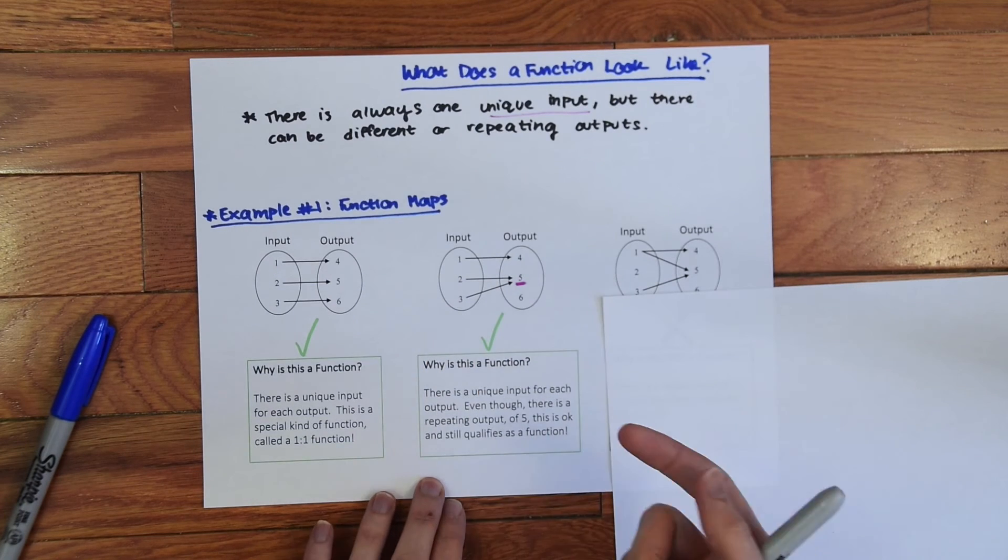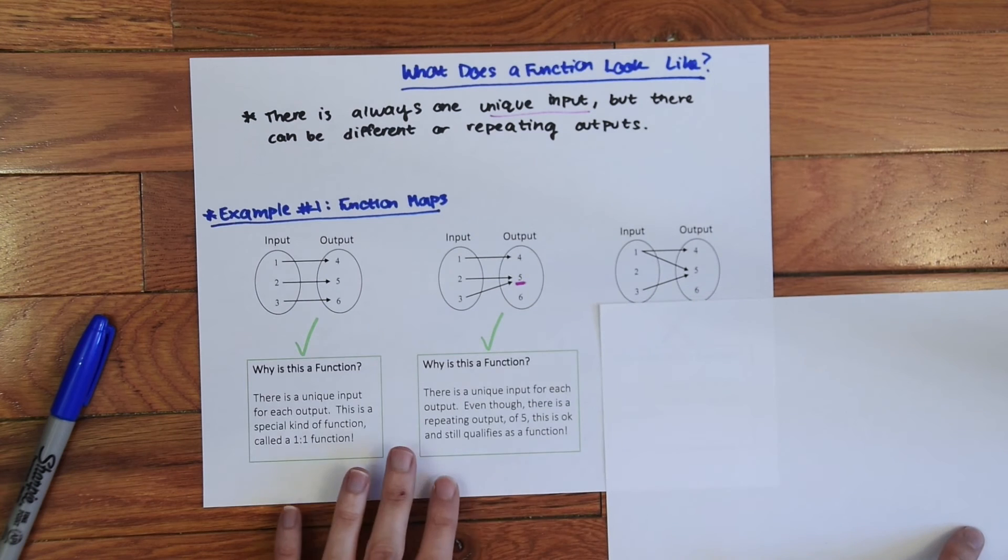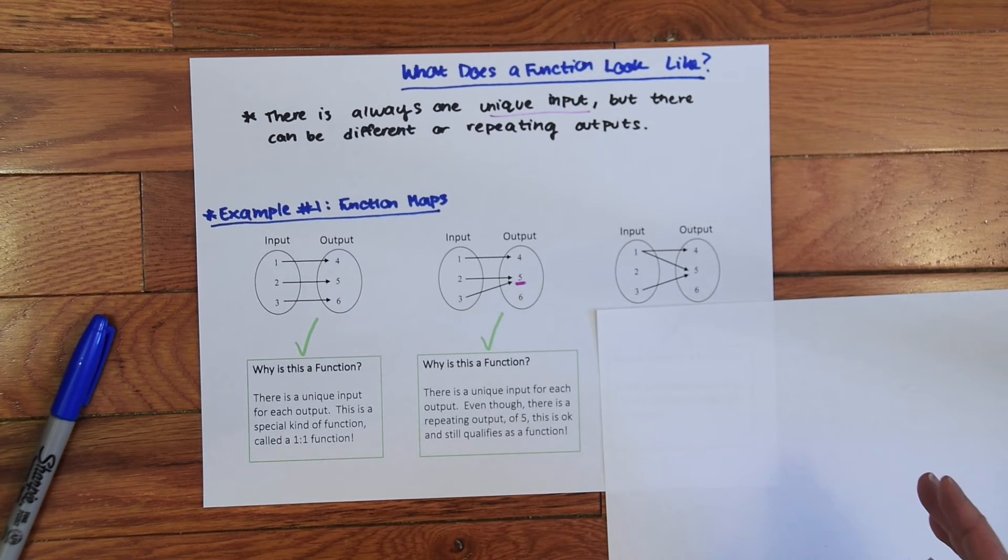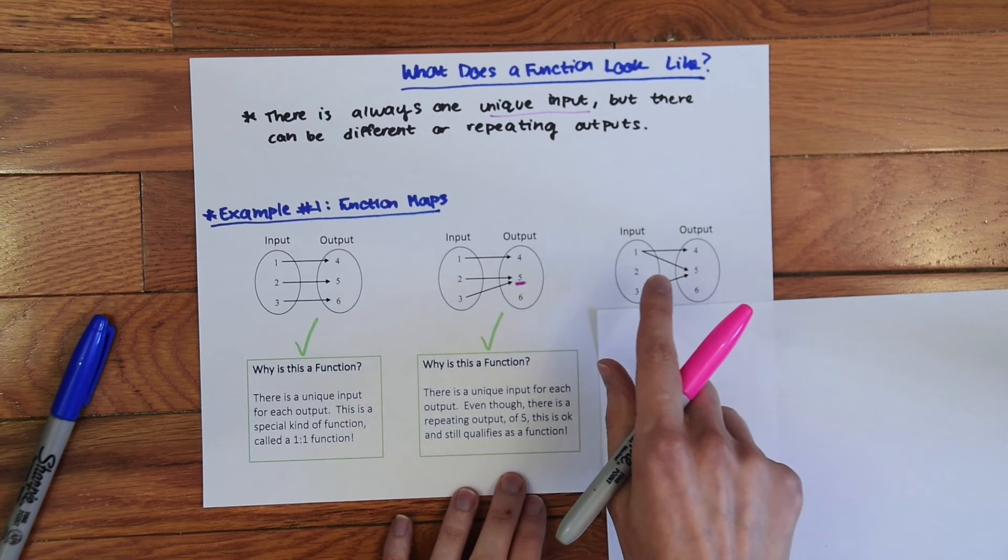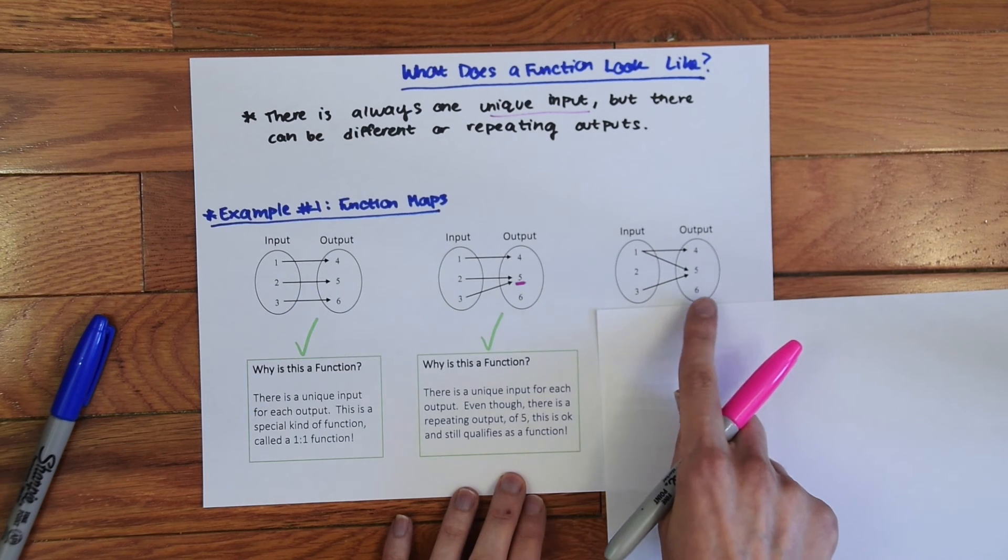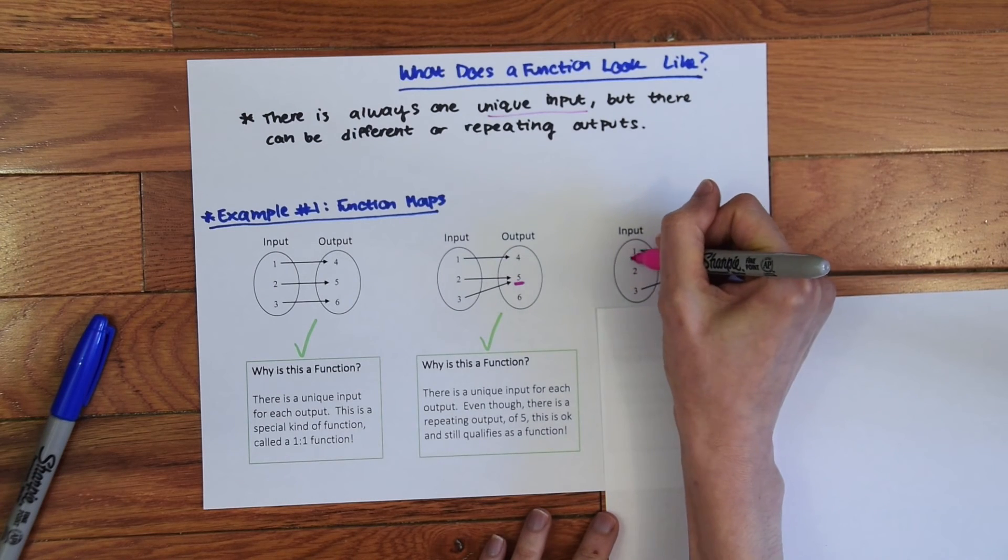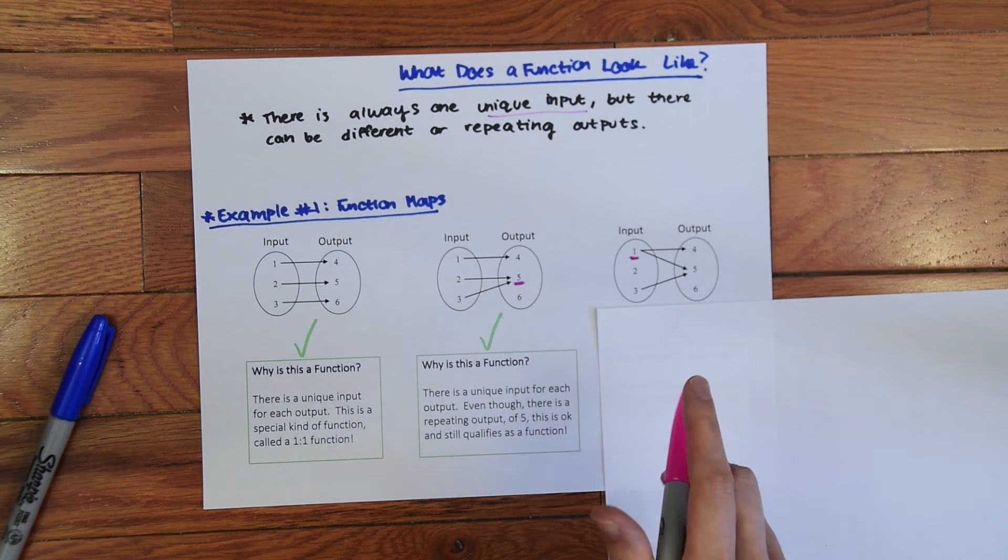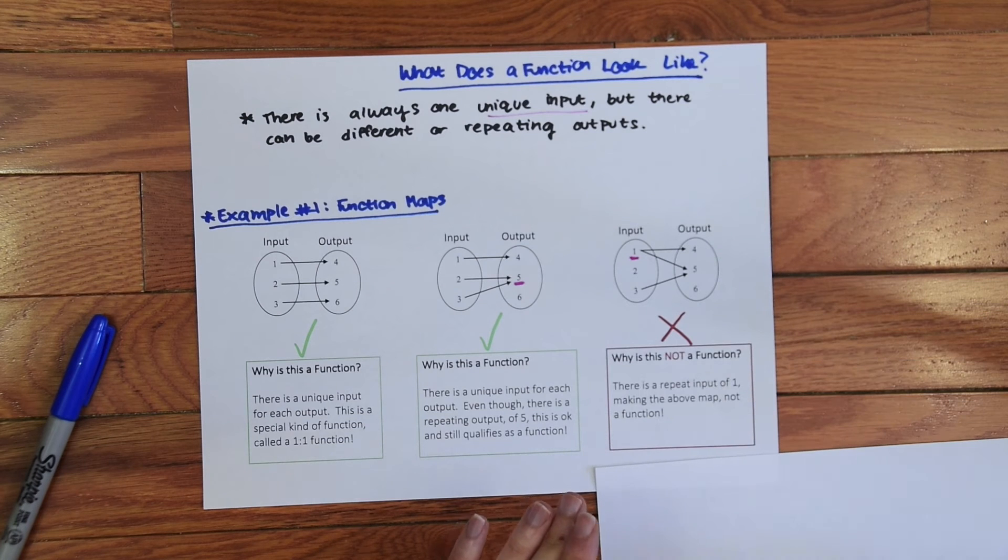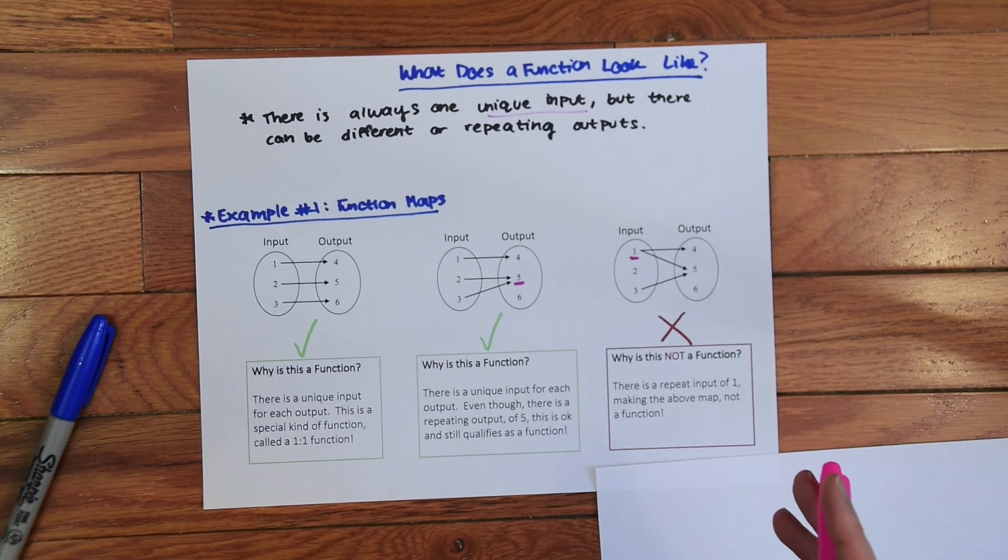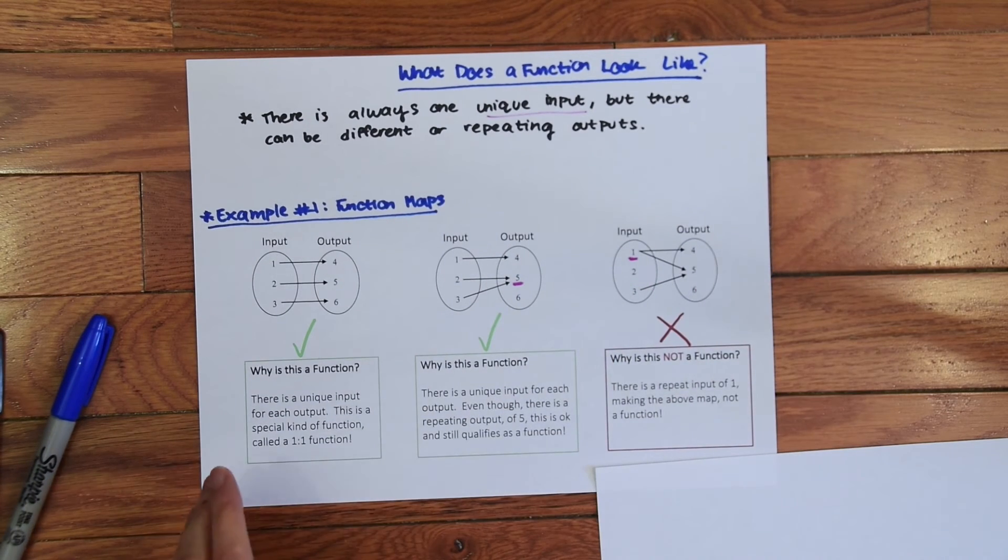We have all our inputs are unique, only five repeats here which is an output, so we know that this is also a function. So the last example here we have one is paired with four, then we have one is paired with five, and then we have three is paired with five. So notice there's a repeat here, this one repeats. Since the input repeats this is not a function. So when you're looking at function maps be aware of repeating inputs, those will not be functions.